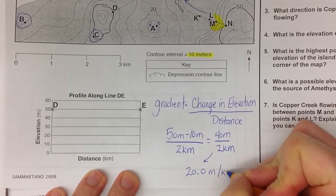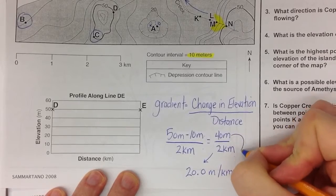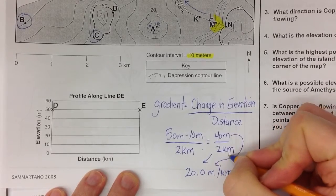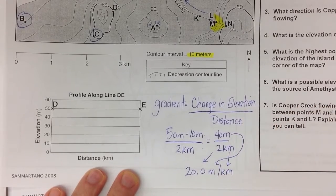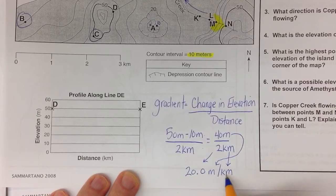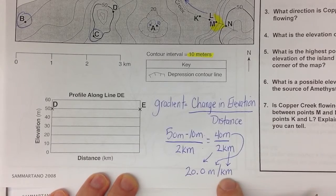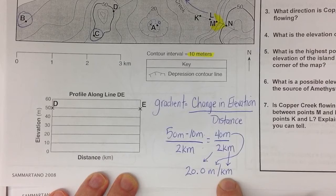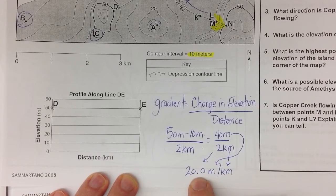That's going to end up being 20.0. Don't forget about your tenths place value. Meters per kilometer. That numerator unit goes first. That denominator unit goes second. And that's what your gradient is going to be. So every kilometer you travel between B and C, the elevation is going to change by 20 meters.